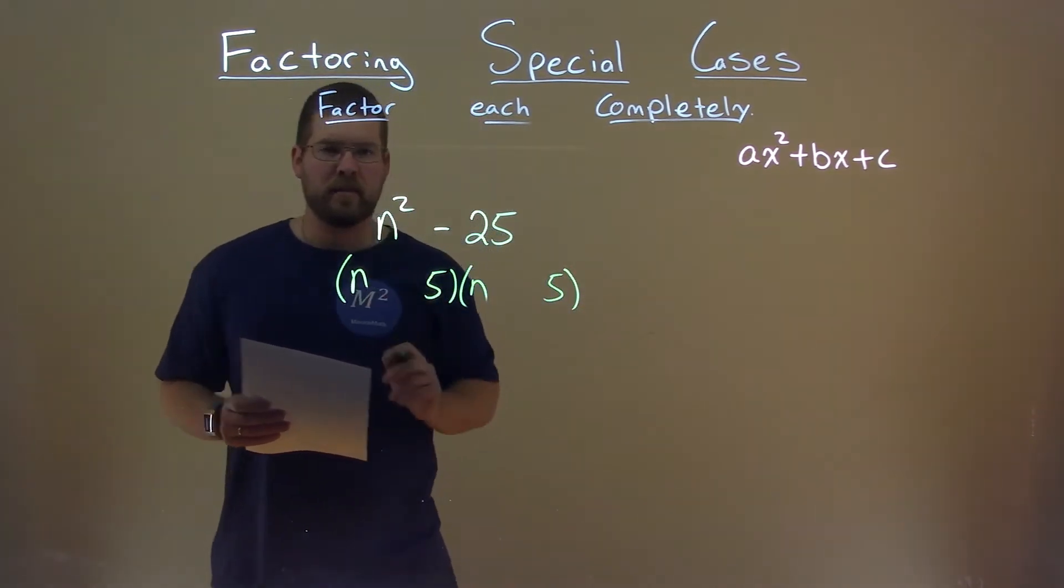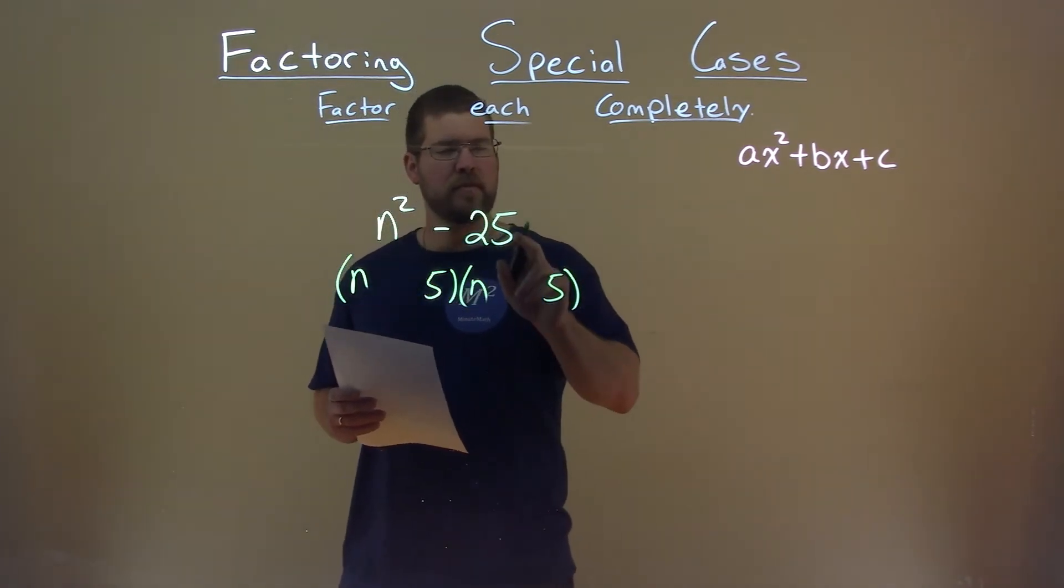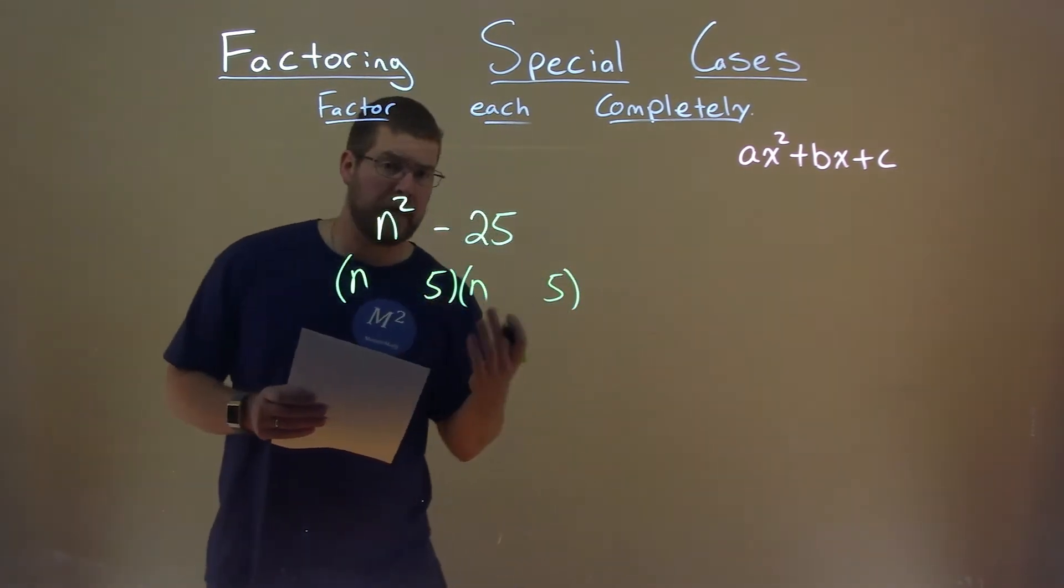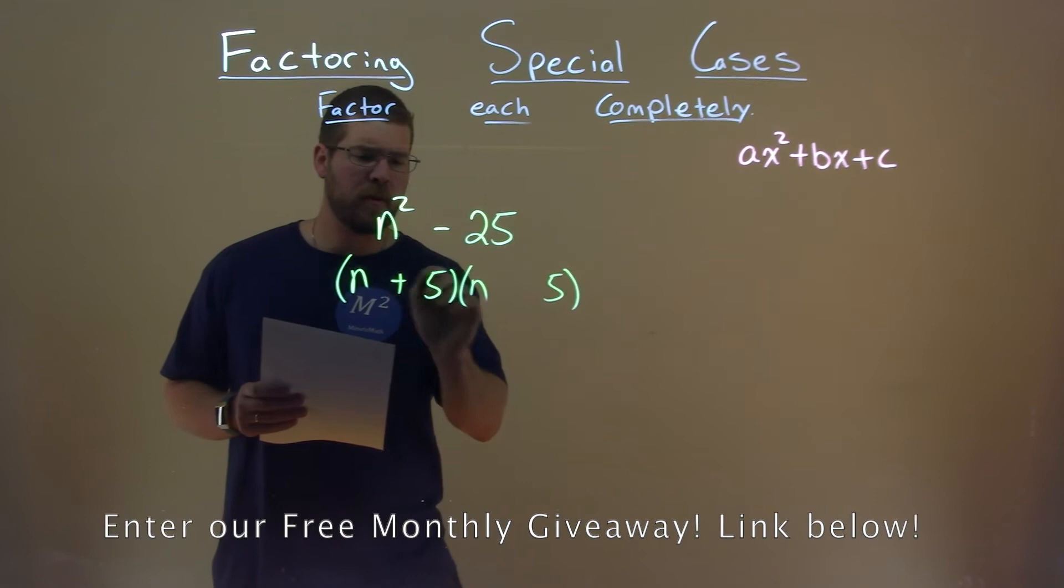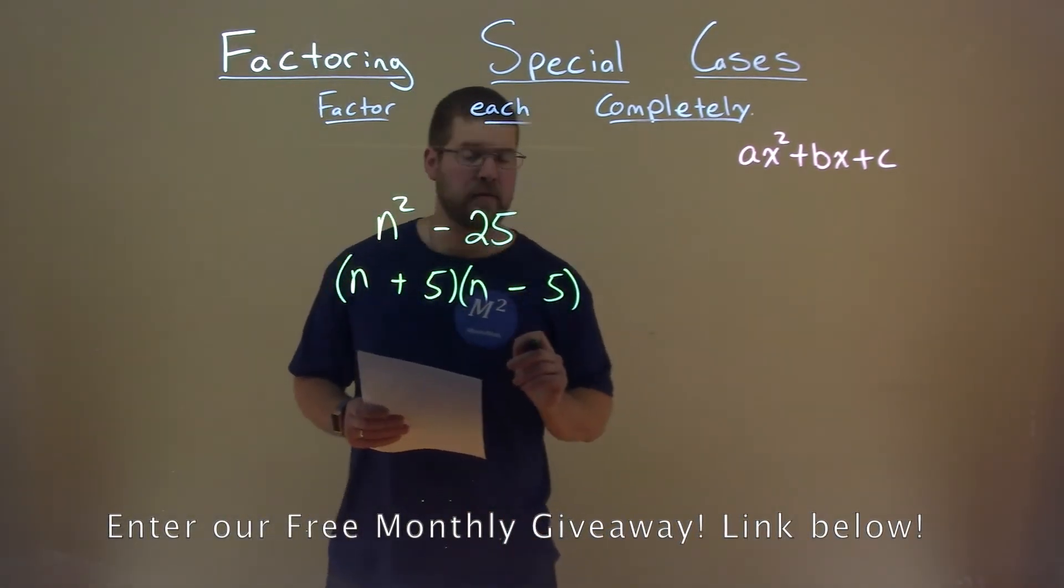So, n times n will give us n squared. 5 times 5 is positive 25. We need a negative 25. So if we have one positive, one negative, they multiply out to get a negative 25.